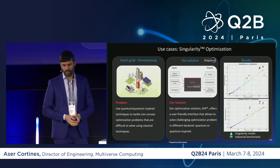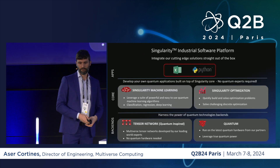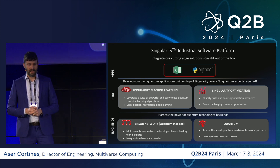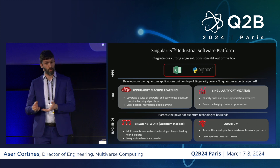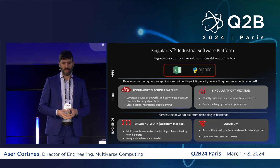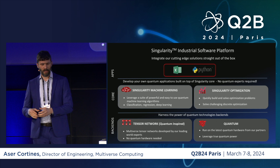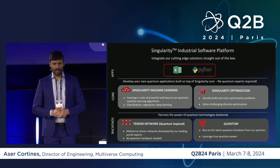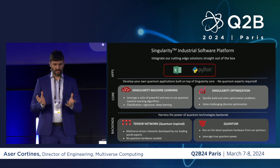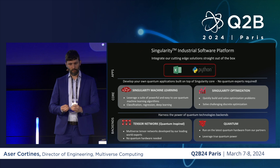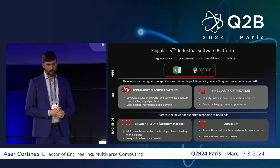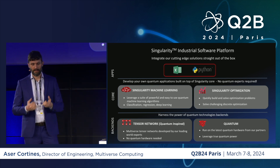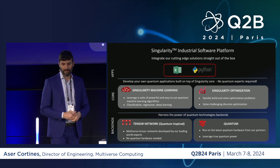Singularity is the platform where clients can easily access technologies — either tensor networks or quantum — and we provide a front end that can be in Excel or Python. We also have web app applications depending on the client's needs. Clients come with a problem, it is sent to our backend, processed by our software, and sent to quantum or quantum-inspired backends to be solved. They get the solution ready to use in a very easy way.